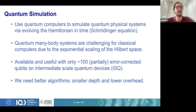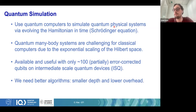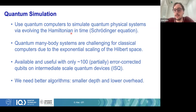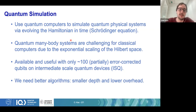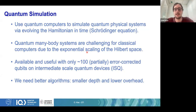Let me just set the scene. The task we want to do is quantum simulation — using a quantum computer to simulate a quantum physical system. The way it works is you have a Hamiltonian, you evolve it in time, and this is equivalent to solving the time-dependent Schrödinger equation. Classically this is challenging because of the scaling of the Hilbert space. Since the scaling is only polynomial for a quantum device, you might be able to solve really interesting problems using quantum computers.